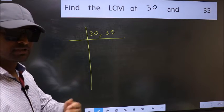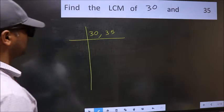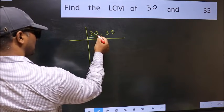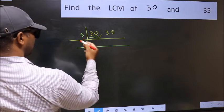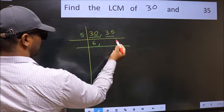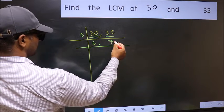Now focus on the first number, which is 30 here. In this number, last digit is 0, so take 5. When do we get 30 in the 5 table? 5 times 6 is 30. The other number, 35. When do we get 35 in the 5 table? 5 times 7 is 35.